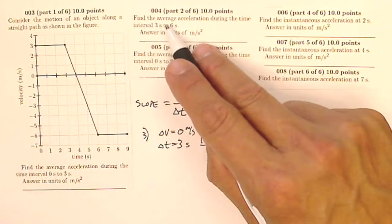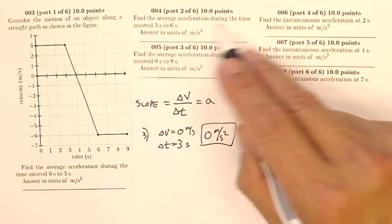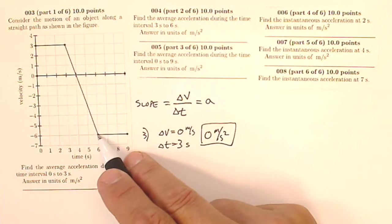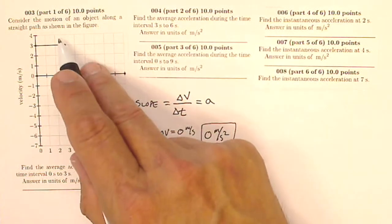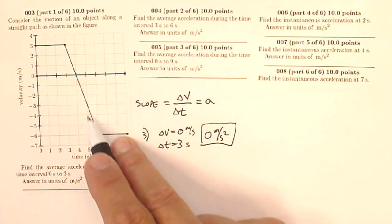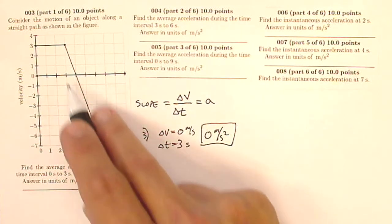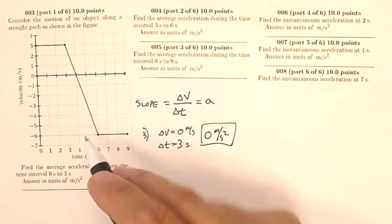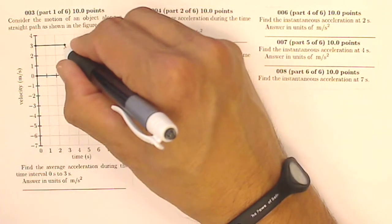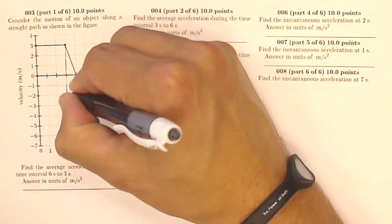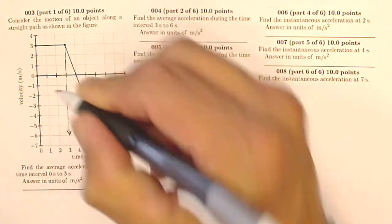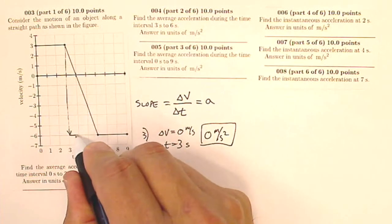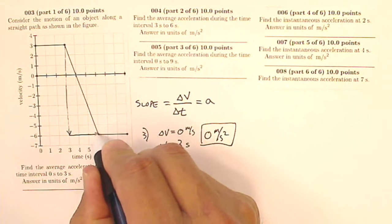Now it says find the average acceleration during the time interval three to six seconds, so I'm going from here to here. What I need is the slope of this line, because I've got my total change in velocity and a total amount of time. I can just look at my graph and figure out what this change in velocity was over that amount of time.